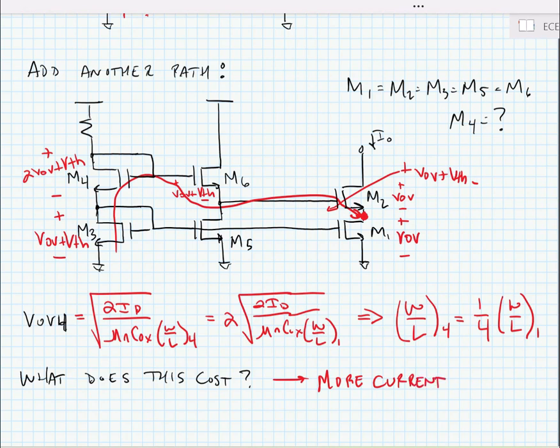So we have a bit more complexity, but we indeed now have a high swing cascode. So we're going to stop there for today, and we will start looking at different amplifiers in our next sets of lectures.